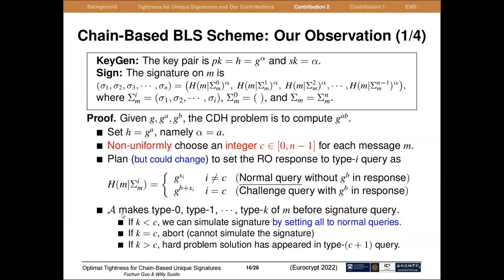Suppose the adversary makes type 0, type 1 through type k queries on message m before the signature query. If k is less than c, it means the adversary has not yet made the type c query on message m, and we can set the query to a normal query and simulate the signature. If k equals c, we have to abort because we cannot simulate the signature. But if k is larger than c, then the CDH solution has already appeared in the type c+1 query.